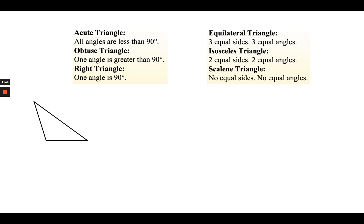Let's take a look at this triangle here and see if we can classify it by both its angles and the length of its sides. When I look at this triangle, this angle right here is greater than 90 degrees. I can use the corner of my paper if I need to, but I know that it is greater than 90 degrees, so it has an obtuse angle. So one way to describe this triangle is using the word obtuse.